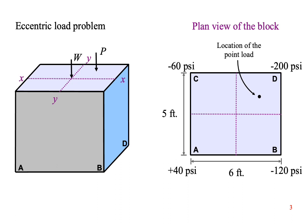Here's another example of visualizing stress. We studied short block problems in chapter 12. Let's say the applied point load is to the right of the yy axis and behind the xx axis. We solve the problem and find the combined stresses at the four corners: plus 40 psi at the front left, minus 120 psi at the front right, minus 60 psi at the rear left, and minus 200 psi at the rear right.